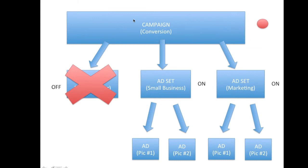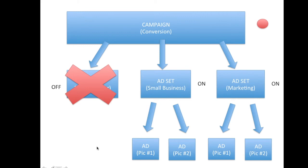This is when you'd turn off an ad set — for example, if you didn't like the results you were getting. In this example we were testing entrepreneurs in one ad set, small business in another, and marketing in a third. If we didn't like the numbers or how one was converting, we'd cut that ad set off, save the budget we were spending on it, and use it on the ad sets that are working. Turning off the ad set also turns off all ads associated with that ad set.